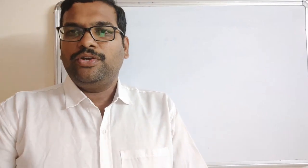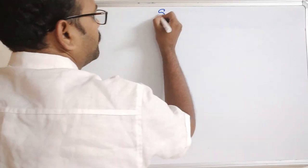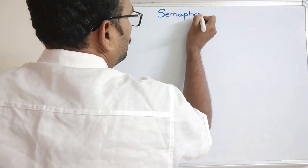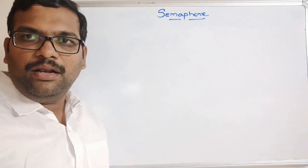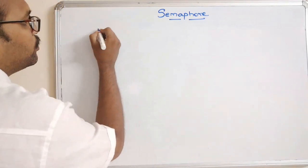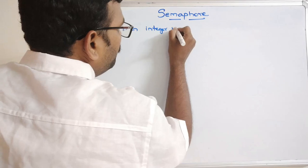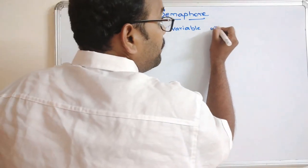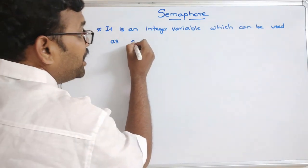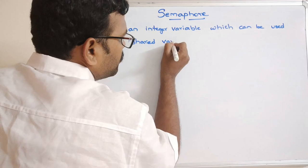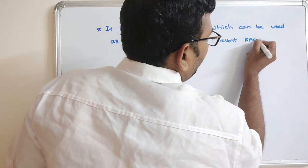Hello friends, welcome back to our channel. In today's session we discuss one more concept in our operating system — that is a semaphore. The semaphore is mainly used as an integer variable, which can be used as a shared variable, to prevent the race condition.